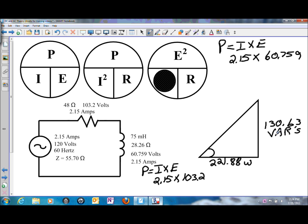Now for solving the totals, we can use a power calculation again. We can go I times E, which would be the 2.15 amps of current flow times the 120 volts. So that would be 2.15 amps of current flow times 120 volts, and that would give us our total power.